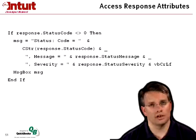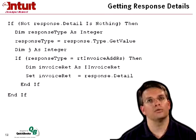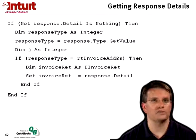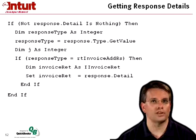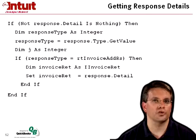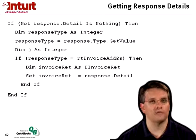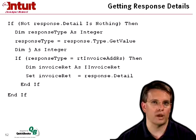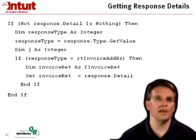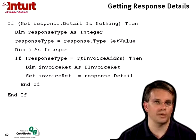To get the details of a response, when there's an actual customer response, I check that the detail isn't null. If there was an error, I might get nothing in the detail, so I check that the detail isn't nothing. Then I walk through, make sure that the type is what I expect it to be. In this case, I'm expecting an invoice add, so I verify that it's an invoice add response. And I get the individual response within that, which is the invoice ret object. That's the response detail, and again, that is an upcast.